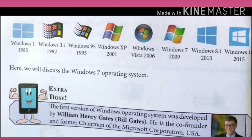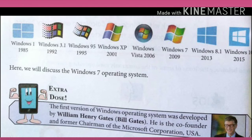We will discuss the Windows 7 operating system in this chapter. The first version of the Windows operating system was developed by William Henry Gates, whom we know as Bill Gates. He is the co-founder and former chairman of the Microsoft Corporation, USA.